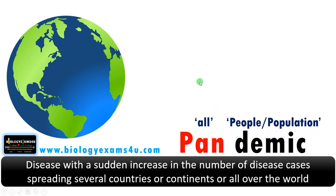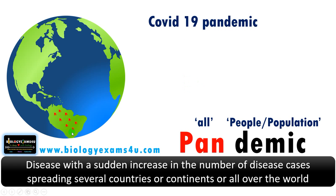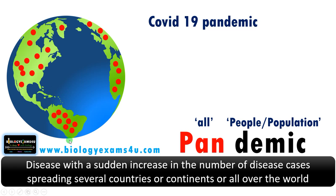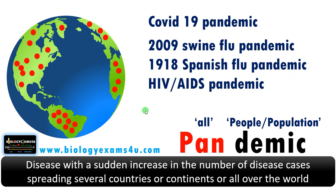We are now familiar with the term COVID-19 pandemic. A disease with a sudden increase in cases spreading across several countries or all over the world is termed a pandemic. In other words, a disease outbreak starts as an epidemic, and if it spreads to several countries, continents, or all over the world, it is called a pandemic. Other examples include the 2009 swine flu pandemic, the 1918 Spanish flu pandemic, and the HIV/AIDS pandemic.